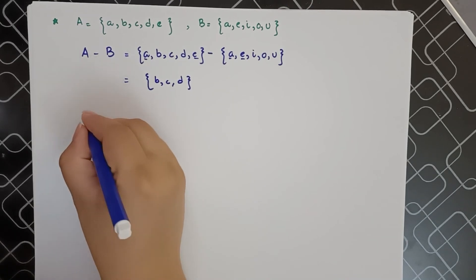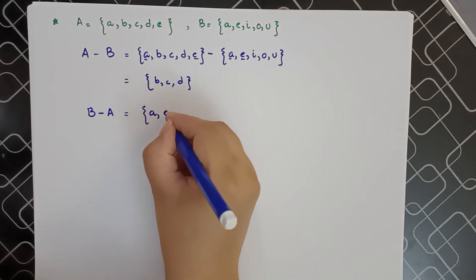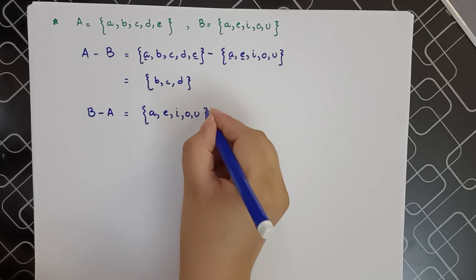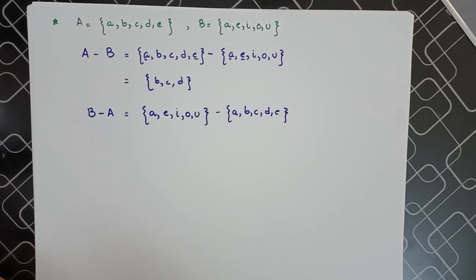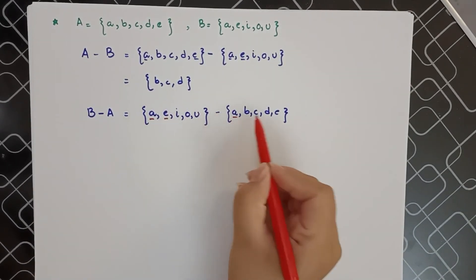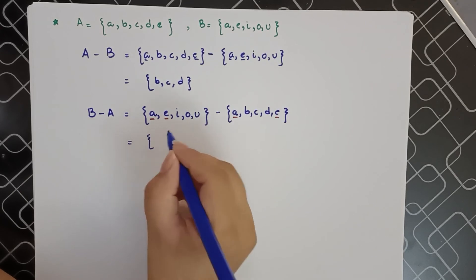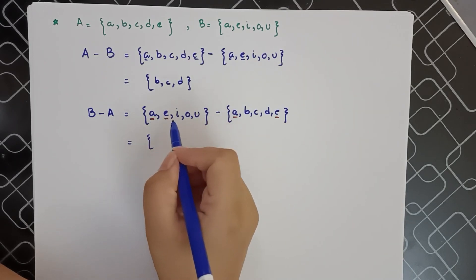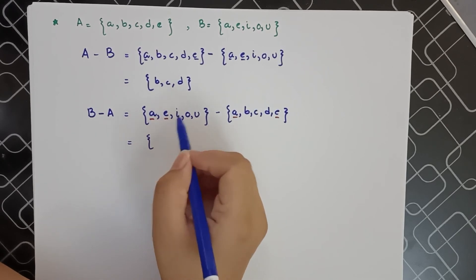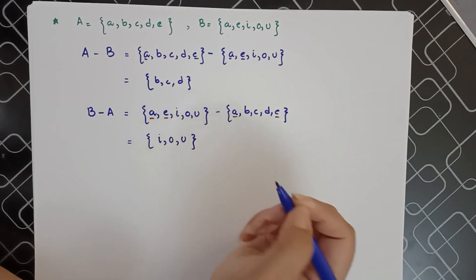Now if we are asked about B minus A, it will be different. We write {A, E, I, O, U} minus {A, B, C, D, E}. The common elements are again A and E. But when we subtract the elements of A from B, the remainder is different. After taking out A and E from B, the remaining elements are I, O, and U. So B minus A equals {I, O, U}.